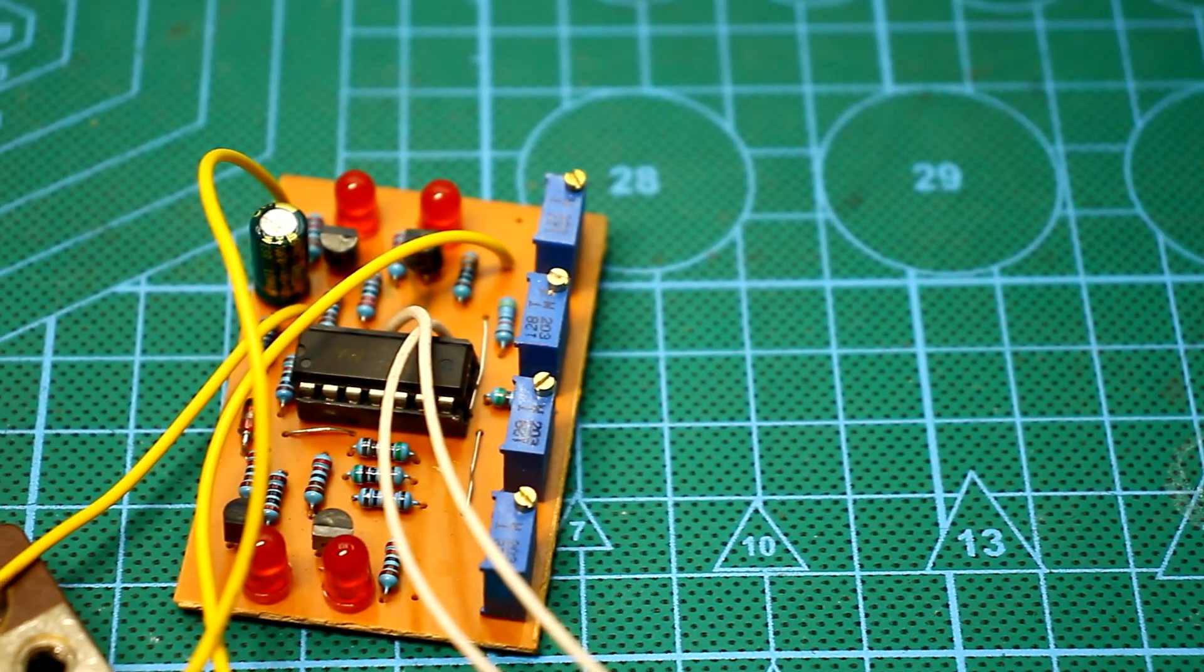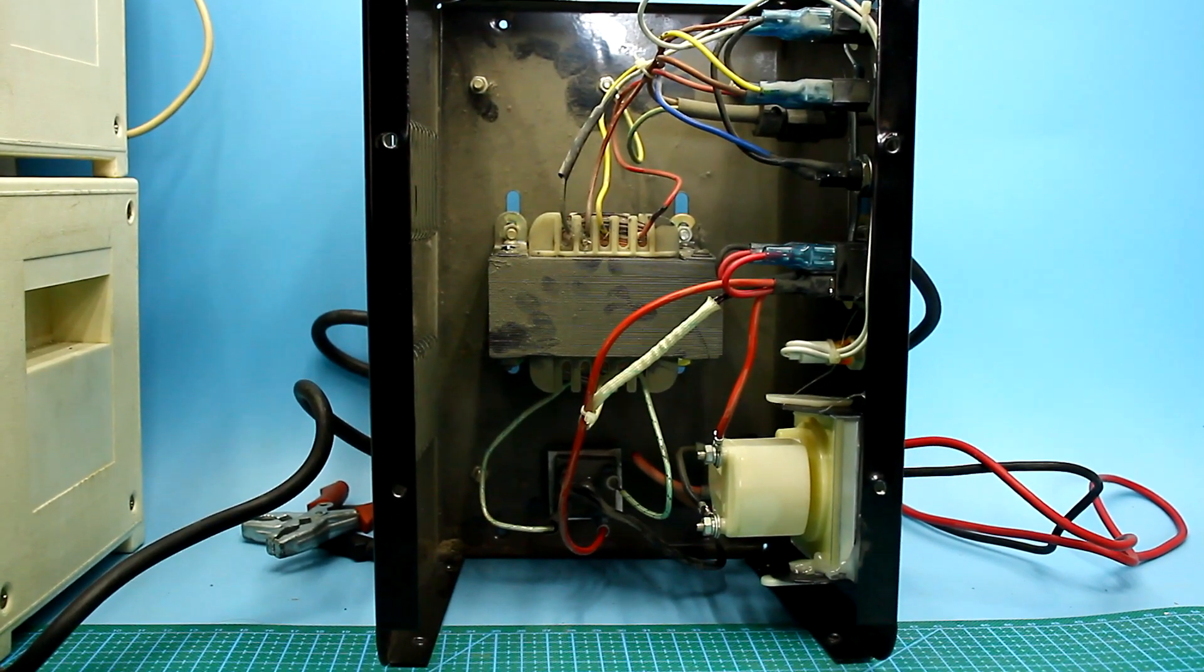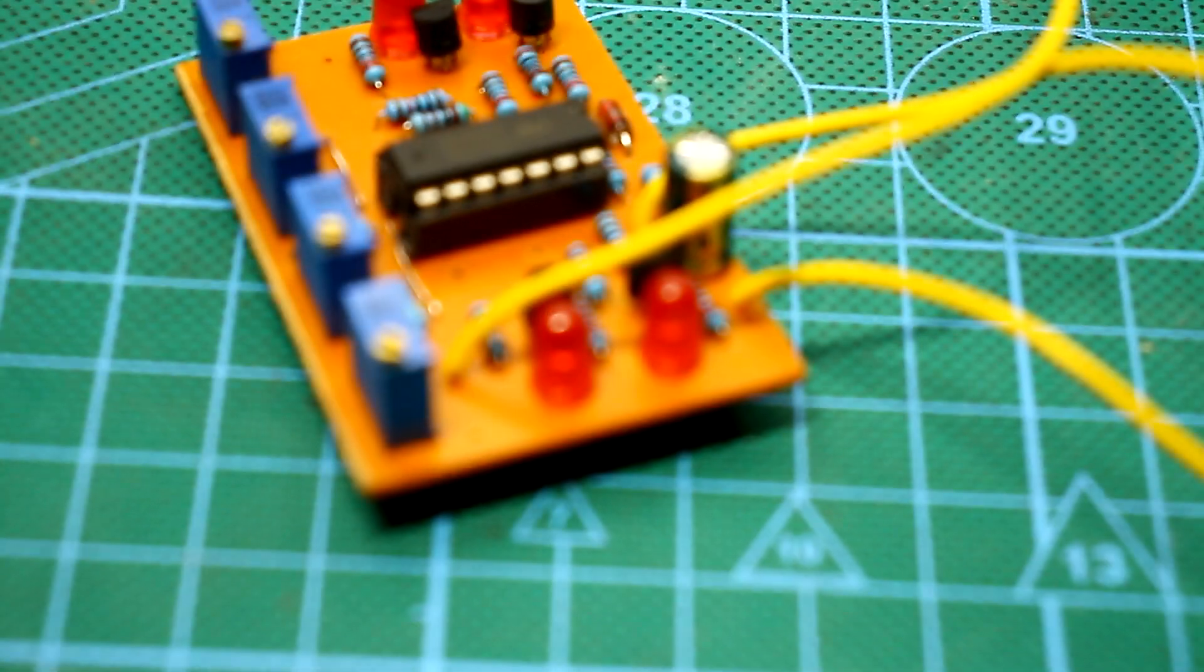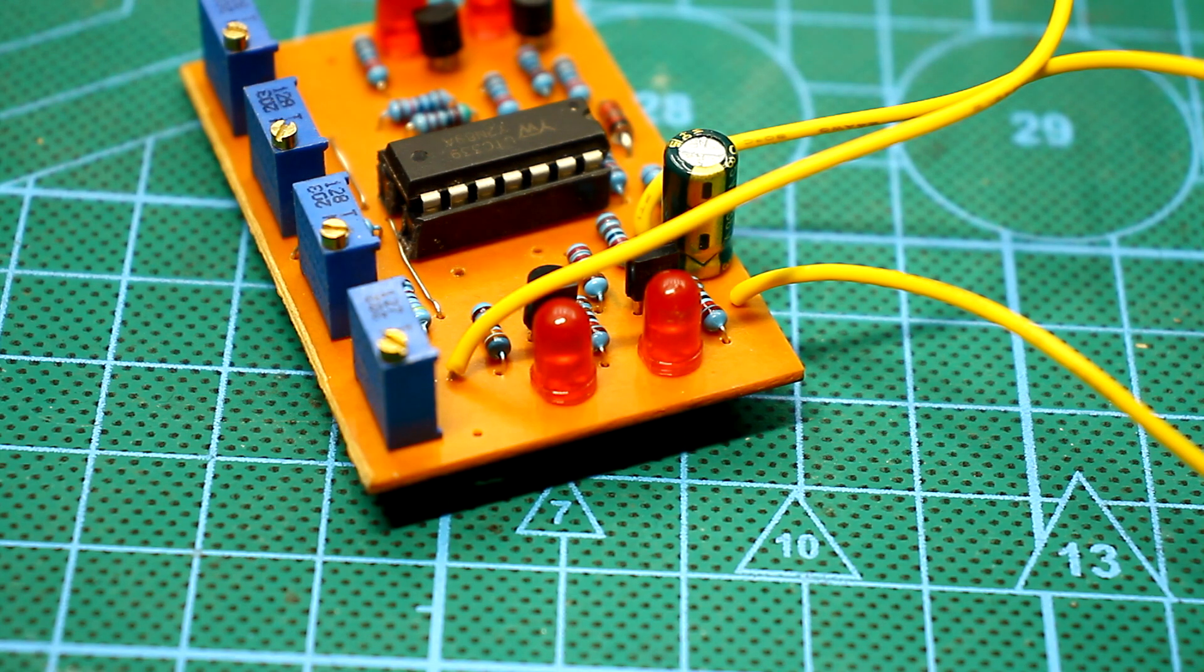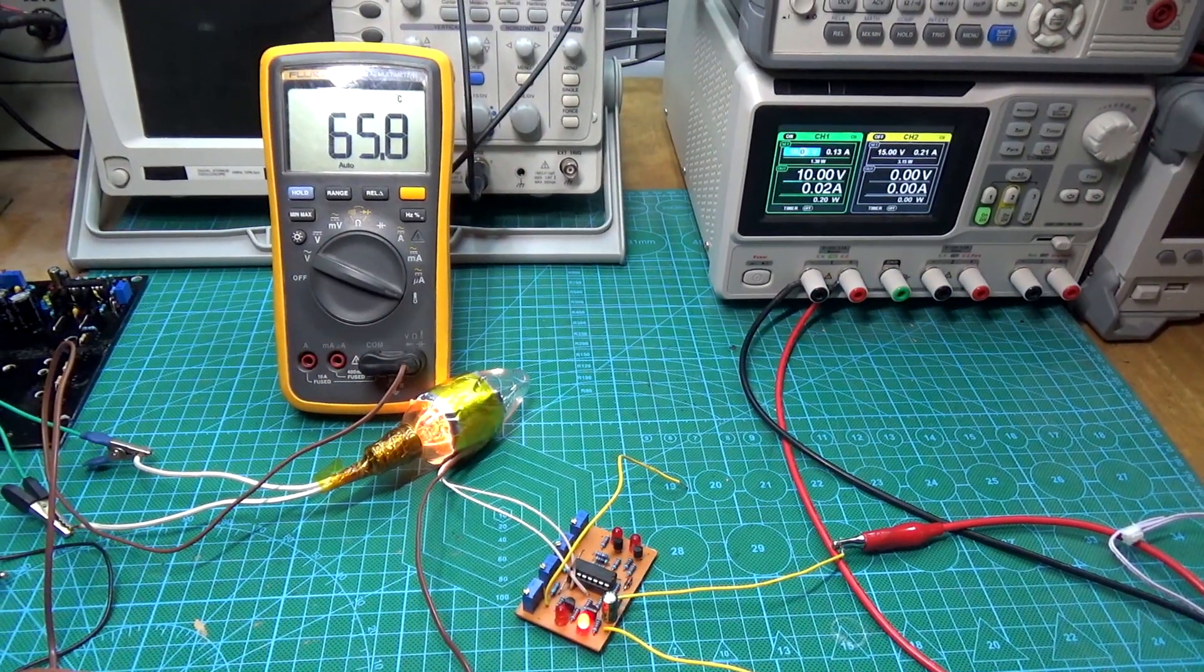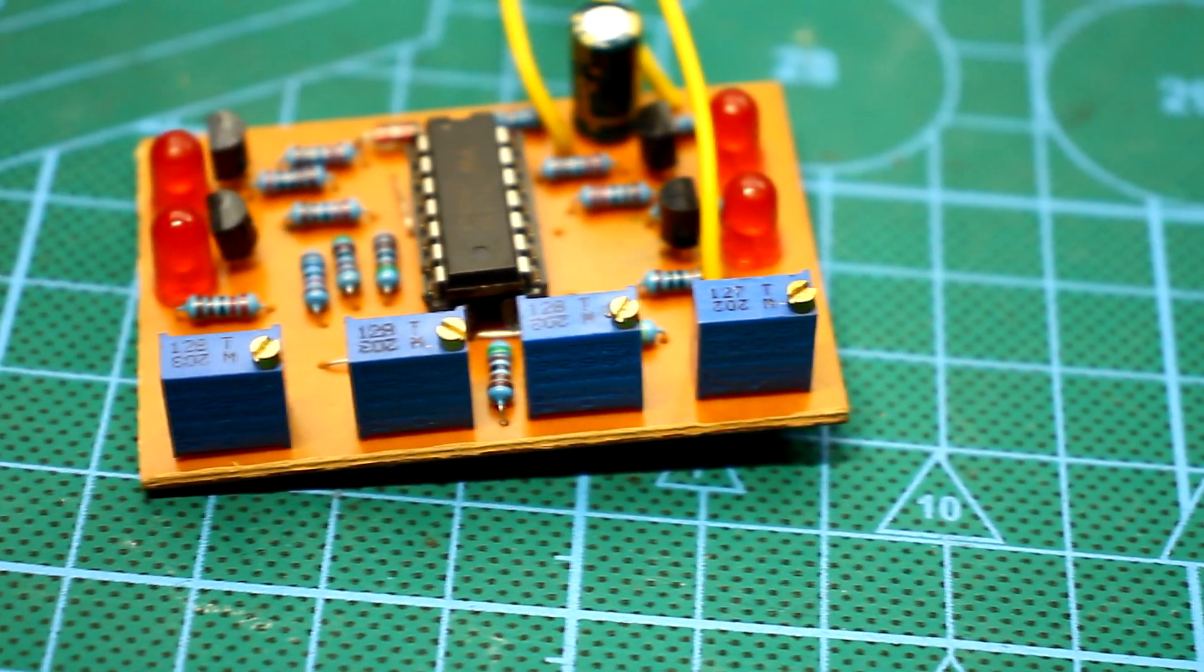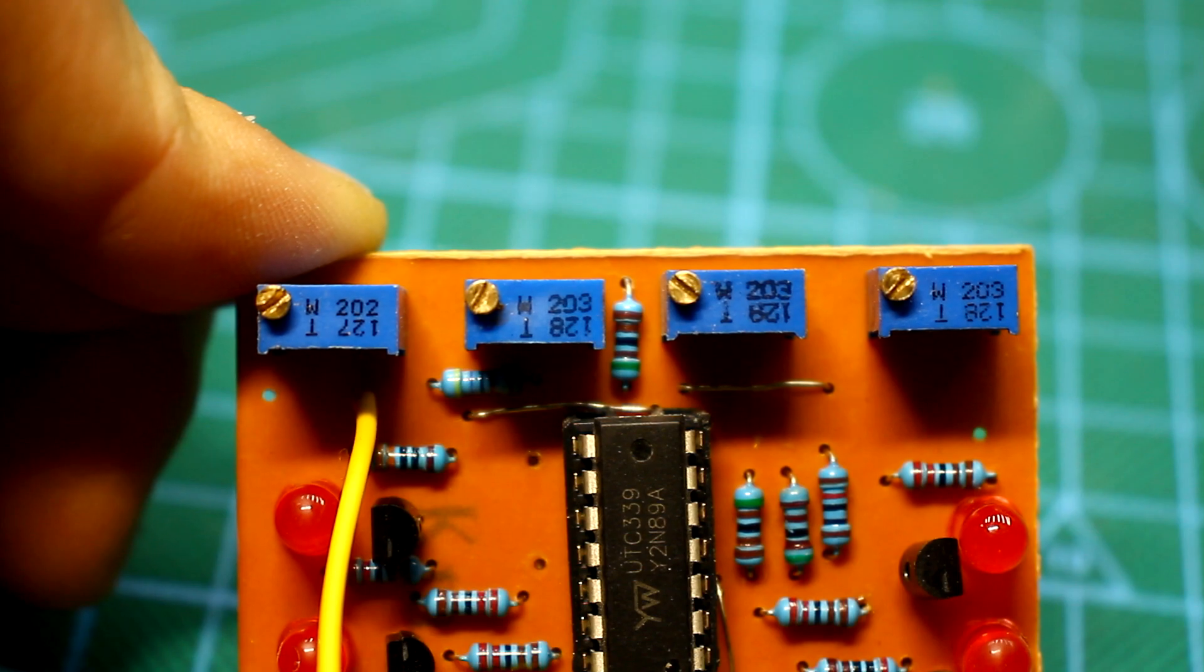The device can actually be any. For example, such protection can be used in a charger. On the board, we have four indicator LEDs for each of the protections. We can assign them to know exactly what protections work. We also have four trimmer multi-turn resistors to set the thresholds for each protection.